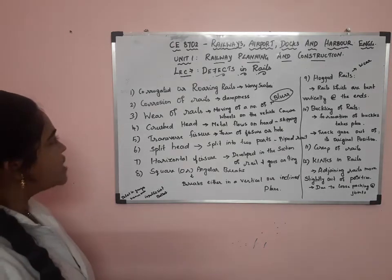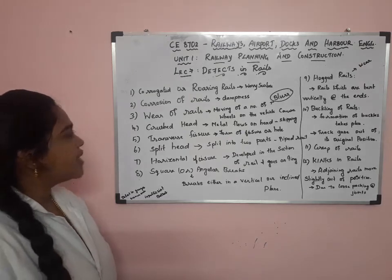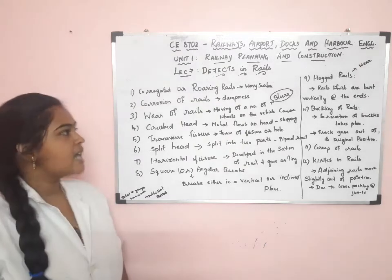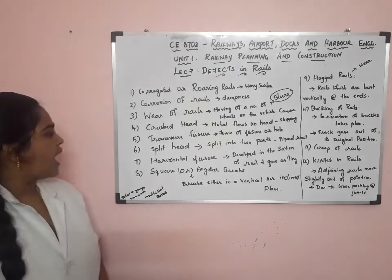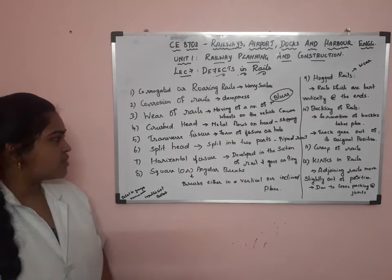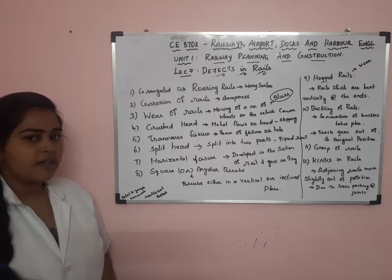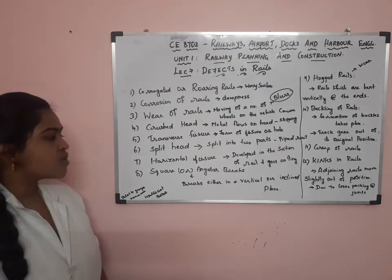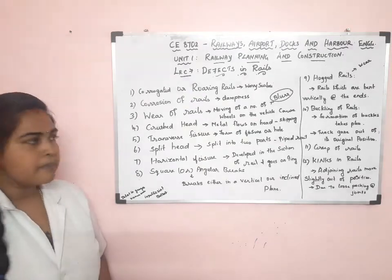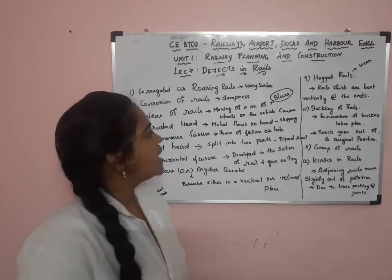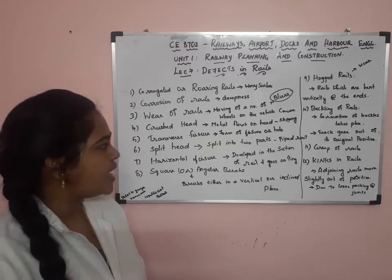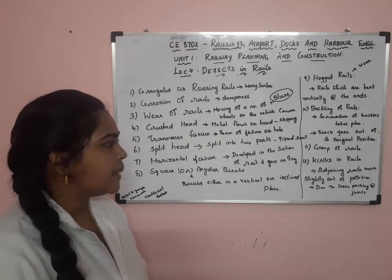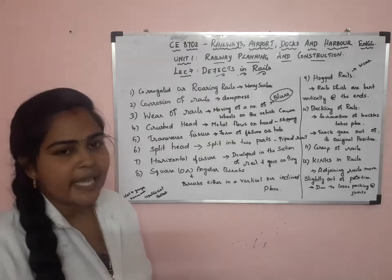The first one is Corrugated or Roaring Rails. Second one is Corrosion of Rails. Third one is Wear of Rails. Fourth one is Crushed Head. Fifth is Transverse Fracture. Sixth is Split Head. Seventh is Horizontal Fracture. Eighth is Square or Angular Breaks. Ninth is Hogged Rails. Tenth is Buckling of Rails. Eleventh is Creep of Rails. And twelfth one is the Kinks in Rails.